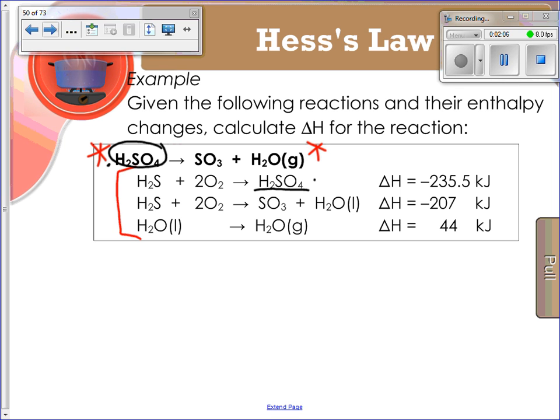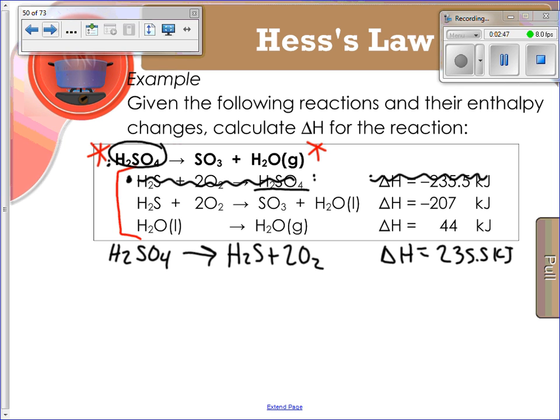However, in this sub-reaction, H2SO4 is a product and we want it to be a reactant. So we're going to flip this entire reaction. Let's rewrite it: H2SO4 yields H2S plus 2O2. That delta H, instead of being negative 235.5 kilojoules, is now positive 235.5 kilojoules. I'm going to cross this off because it no longer exists.